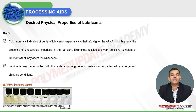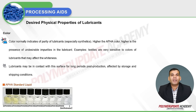The desired properties of lubricants include color, which normally indicates the purity of lubricants, especially synthetic lubricants. Higher APHA color indicates a higher presence of undesirable impurities. For example, textiles are very sensitive to the colors of lubricants that may affect whiteness. The second property is viscosity, which is crucial for handling frictional properties; however, the nature of the lubricant surface dictates the required viscosity.